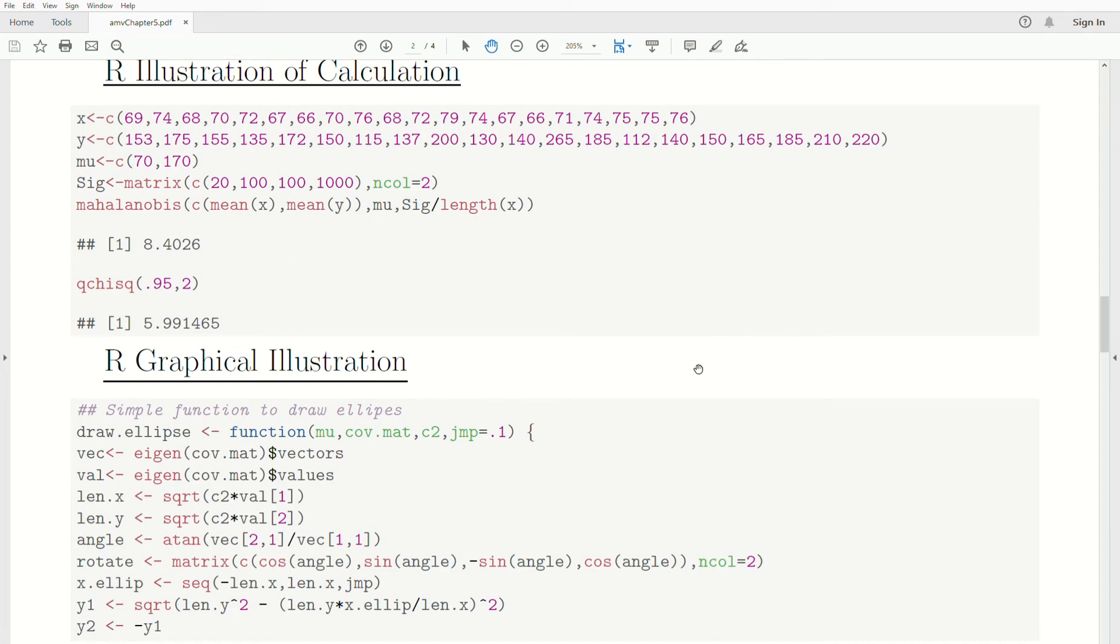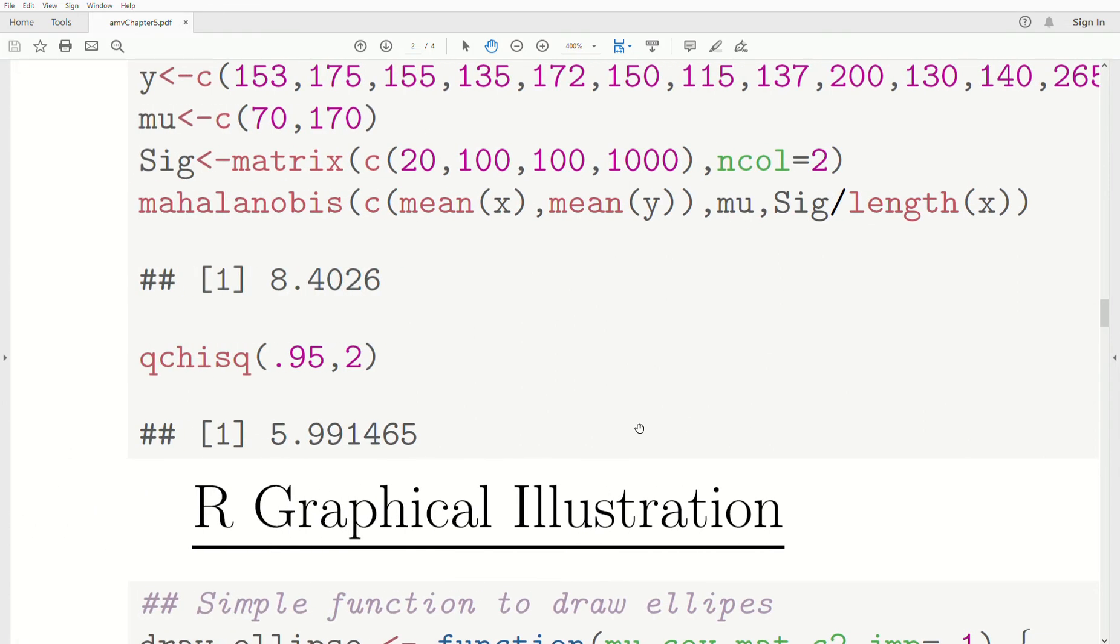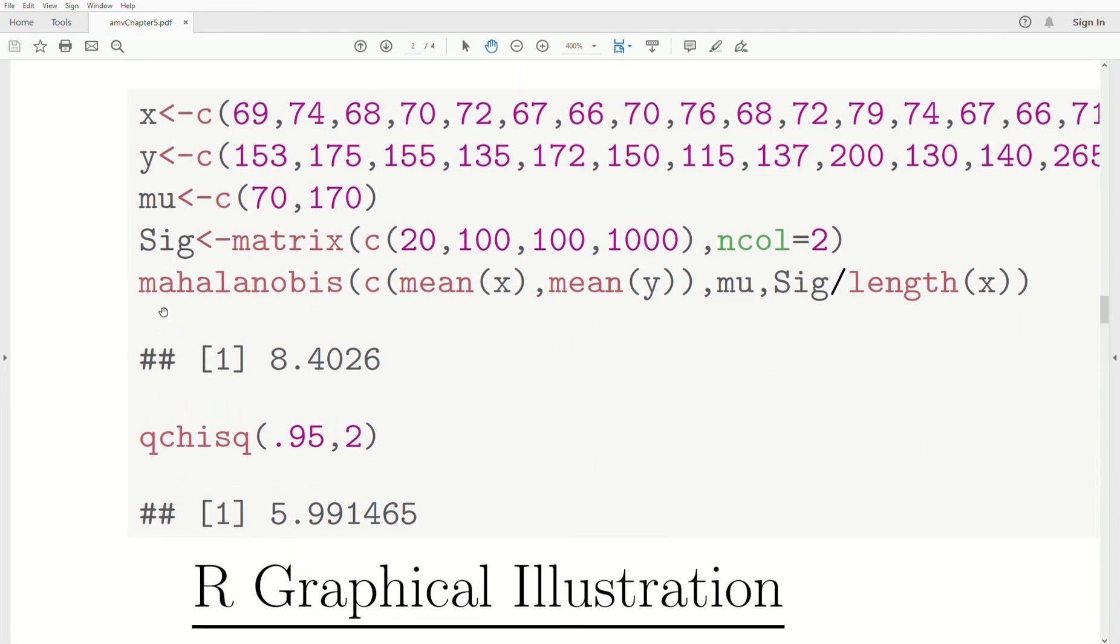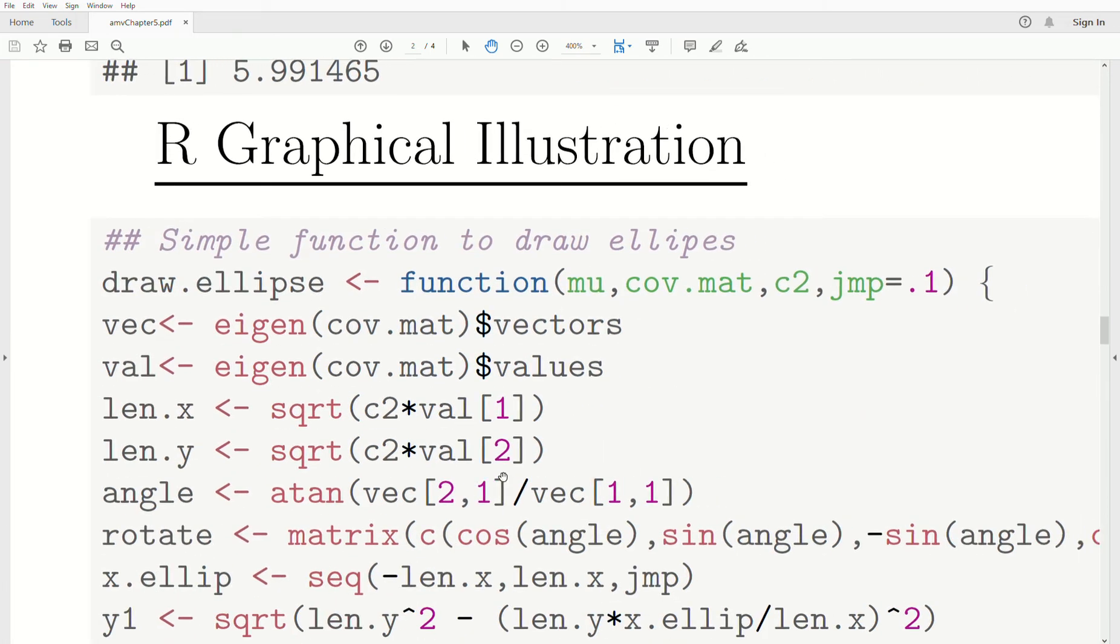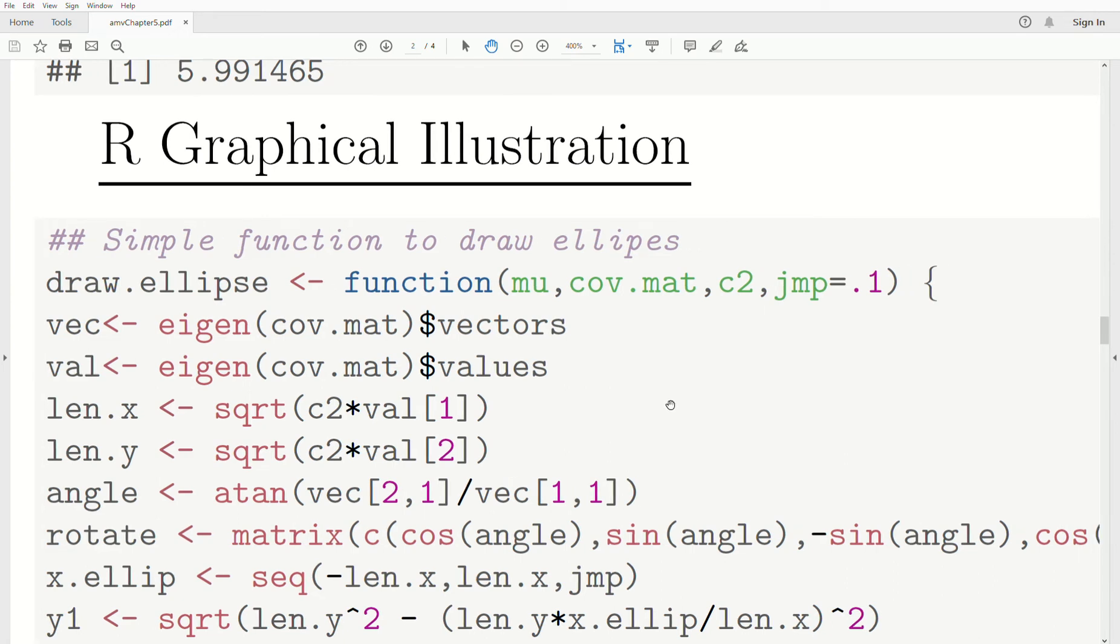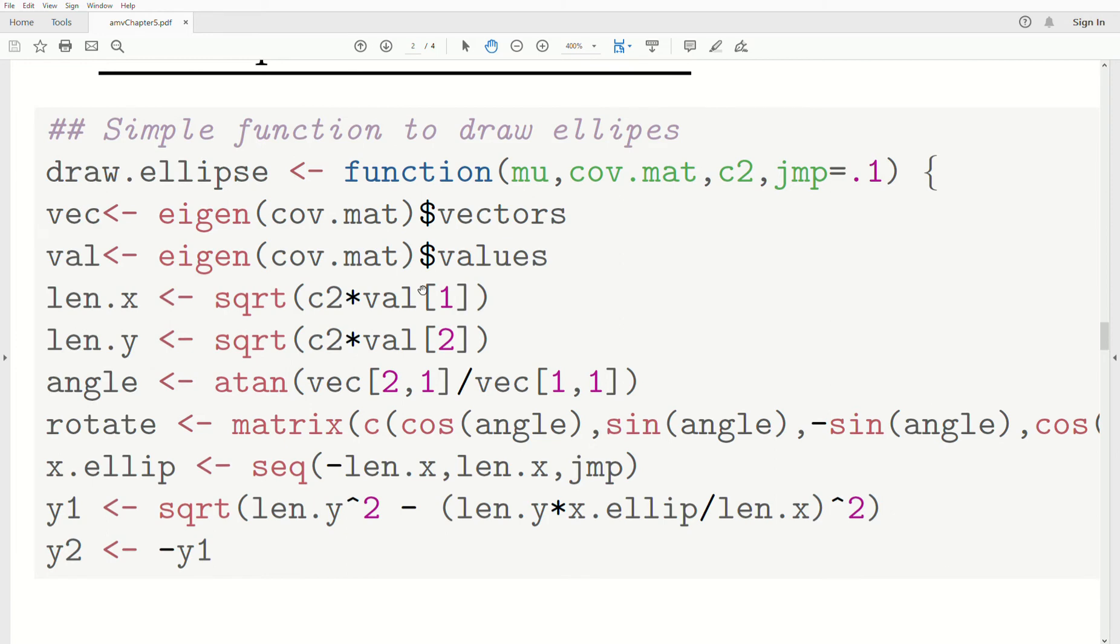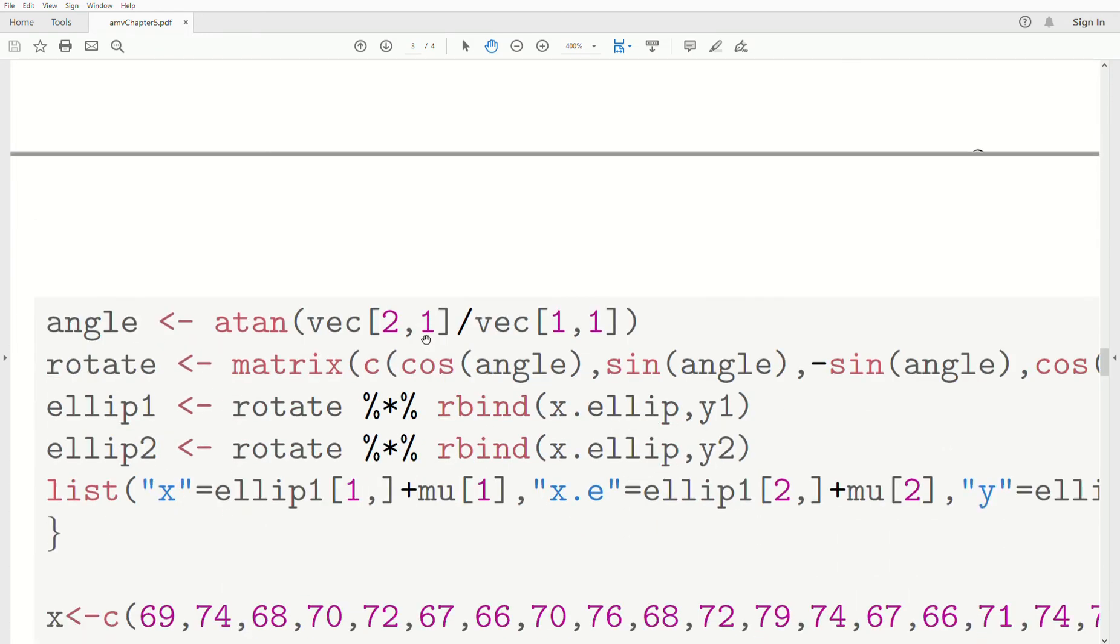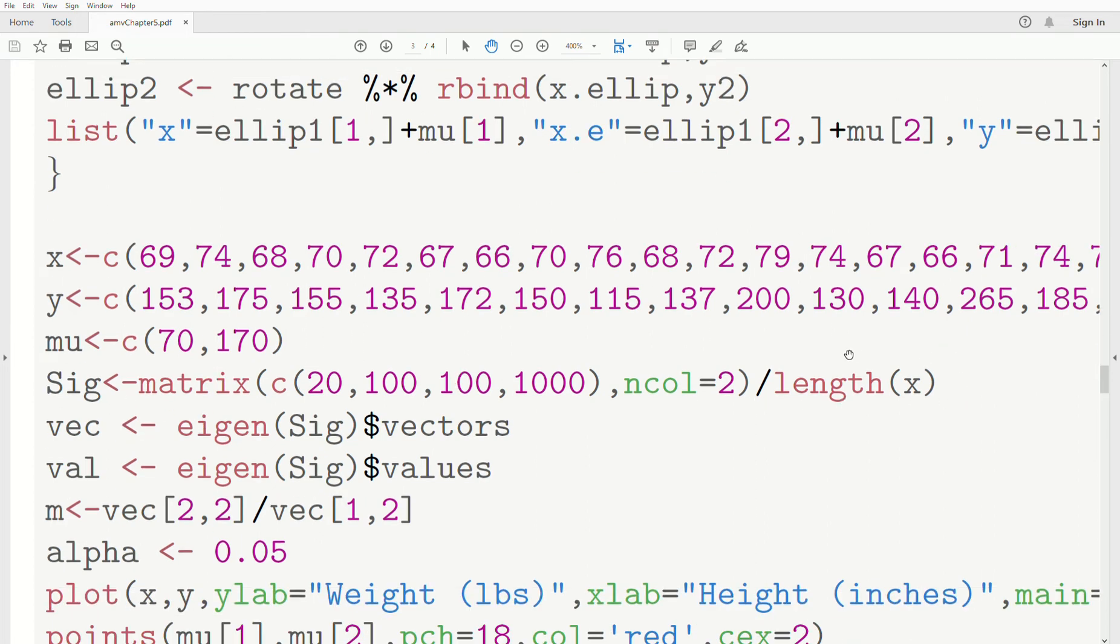Now for a graphical illustration, and perhaps I should have done this to make it bigger. So we use Mahalanobis distance function to calculate it. Now for a graphical illustration, we're not really going to go over the R code, but I wrote a function, which I call draw_ellipse, which I actually think is pretty creative, pretty good. So we're going to make use of that function. So again, we have the X values, the Y values, the mean, sigma. I went ahead and divided it by the n. So that's our sigma.